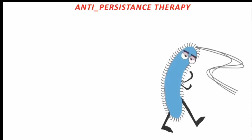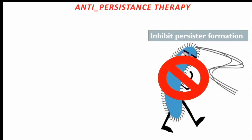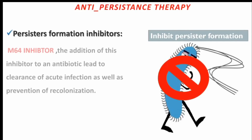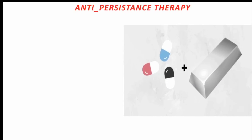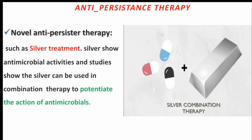The third mechanism is by inhibiting the formation of persister cells from the beginning. Persister formation inhibitors, such as the M64 inhibitor — the addition of this inhibitor to an antibiotic leads to clearance of acute infections as well as prevention of recolonization of these cells. Finally, we have a brand new therapy: silver combination therapy. Silver shows antimicrobial activities, and new studies show that silver can be used in combination with other antimicrobial agents to potentiate the action.